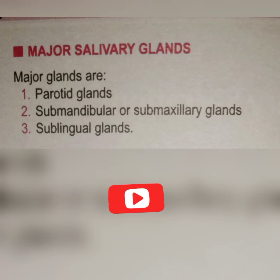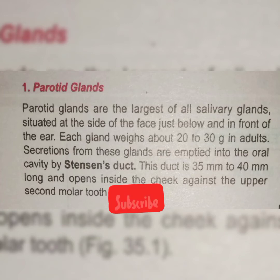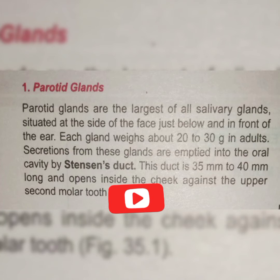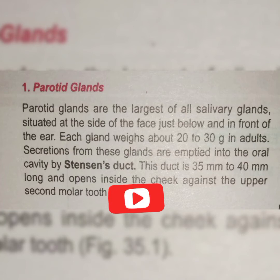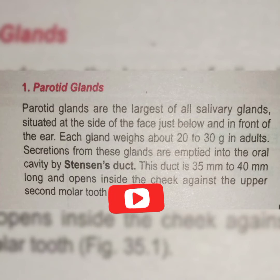The parotid gland is the largest gland, situated inside your mouth at the front of the ear. Each gland weighs about 20 to 30 grams in an adult. Secretion is emptied into the oral cavity by the Stensen's duct, which is 35 to 45 millimeters in size. This Stensen's duct opens into the mouth at the first molar teeth.